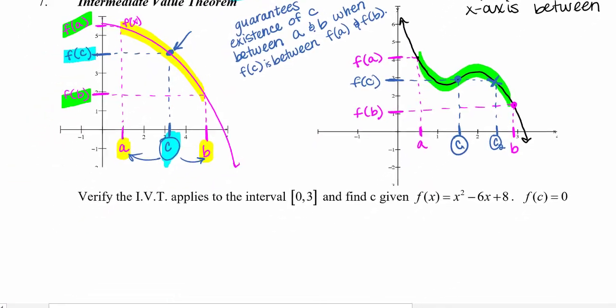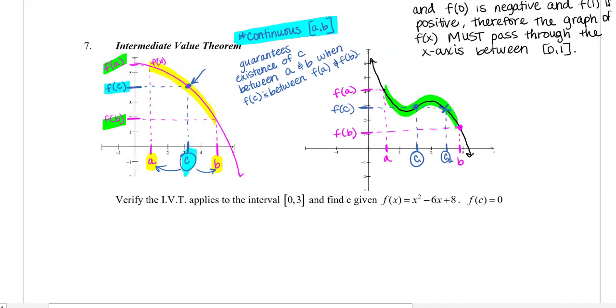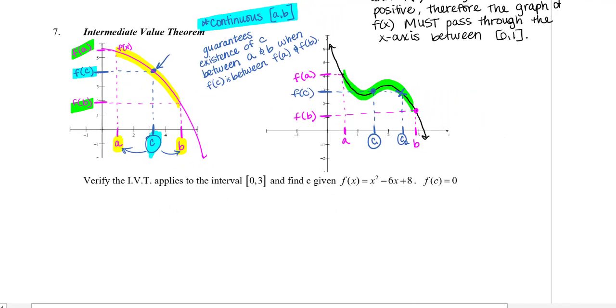Okay? So let's put that into practice for this last question here. It says verify the intermediate value theorem applies to this interval zero to three, and find your c given f of x equals x squared minus six x plus eight. And in this case, you're looking for that y value of zero. Again, that's typically when it's the most helpful, but we can use this for any specific y value.